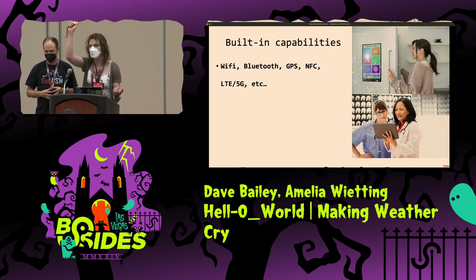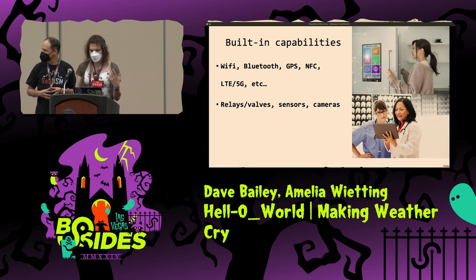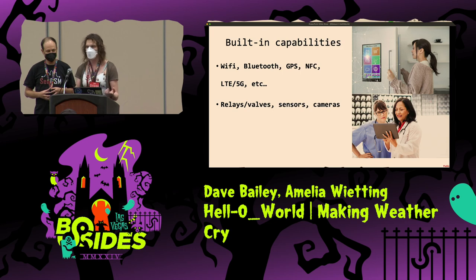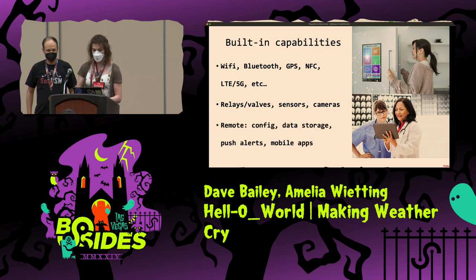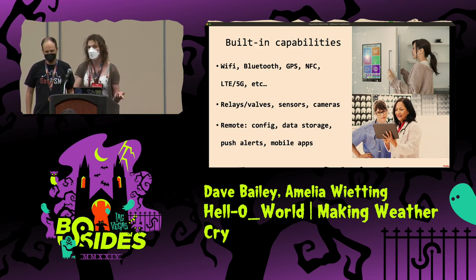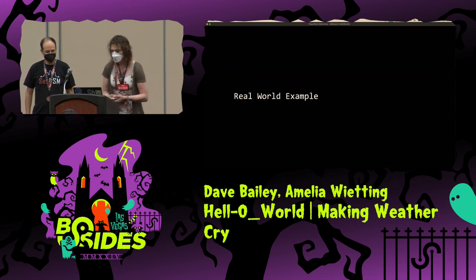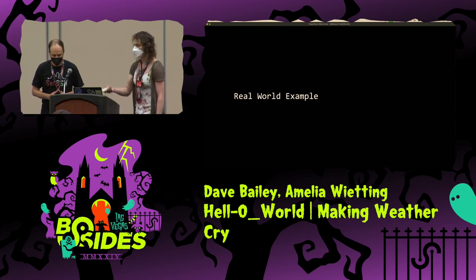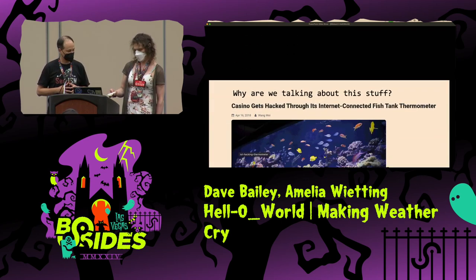With the built-in capabilities of IoT devices today, we find Wi-Fi, Bluetooth, GPS, GLONASS, NFC, new technologies you've never heard of, and old technologies you wonder why they're still using. Has anyone ever used a Flipper on a Tesla? For some reason they control relays, valves, sensors, cameras. There's remote configuration, data storage, push alerts, mobile apps, and even more — including that weird shady Chinese app your device pairs with.